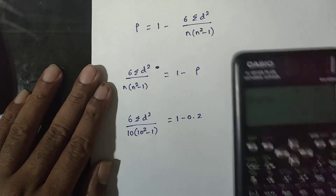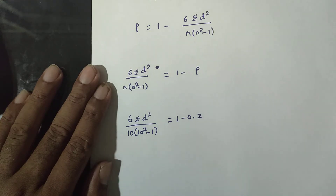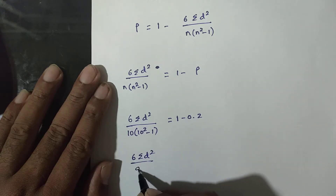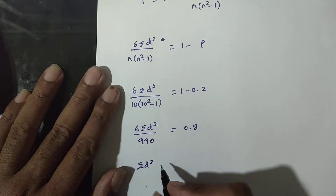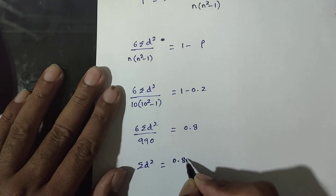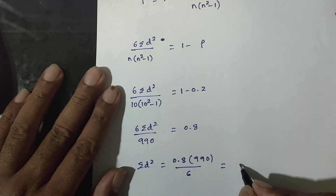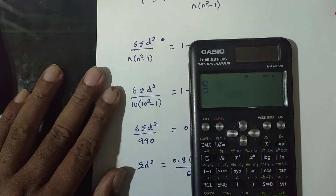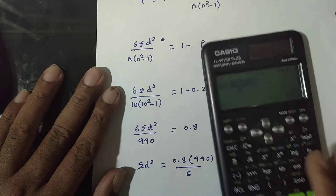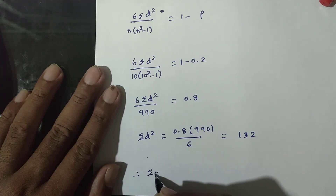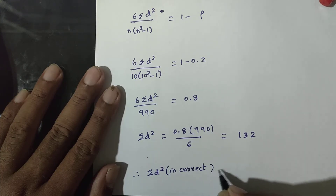Therefore the incorrect summation of d² is 132. The correct summation of d² equals 132 minus 81 plus 49, giving the correct value. Applying the rank correlation formula with the corrected summation of d² gives the correct coefficient of rank correlation.